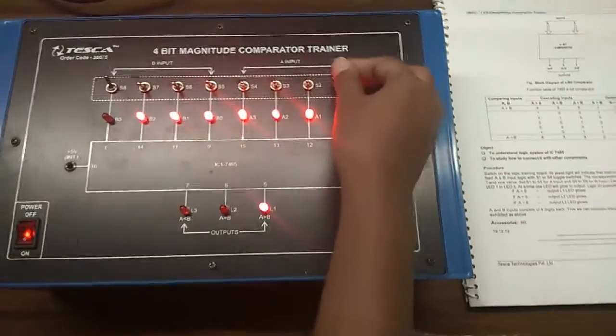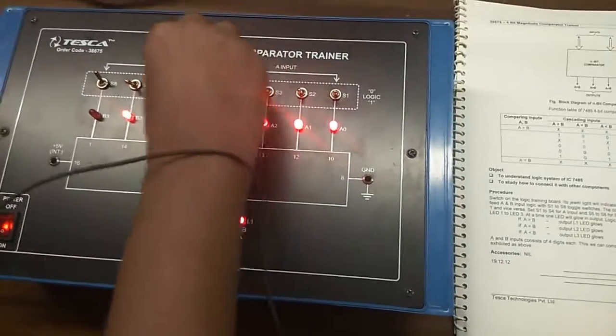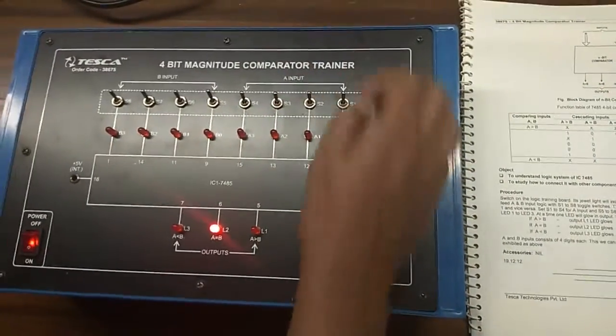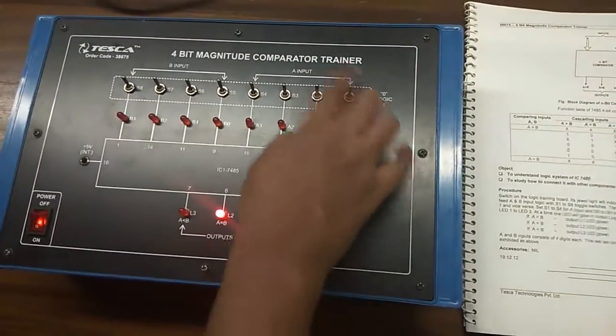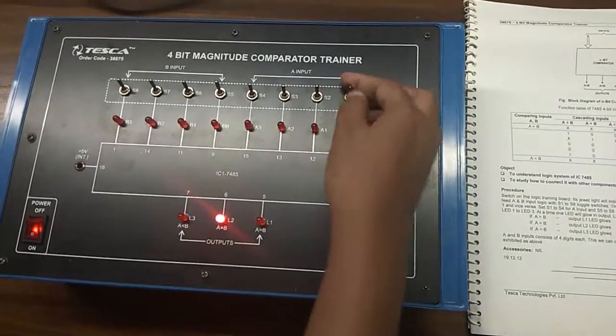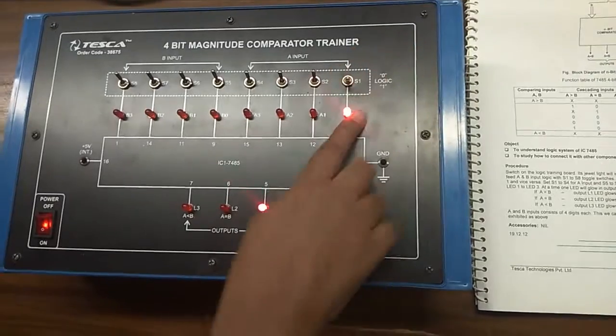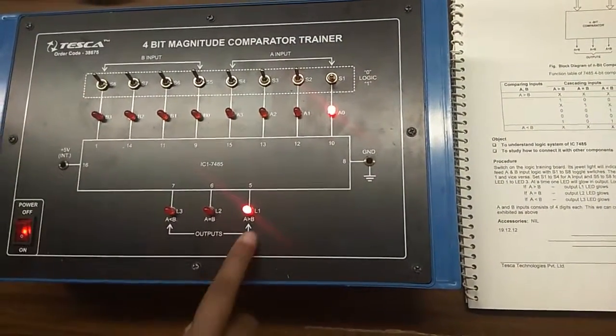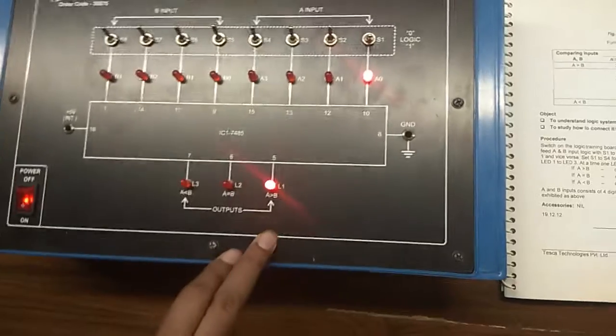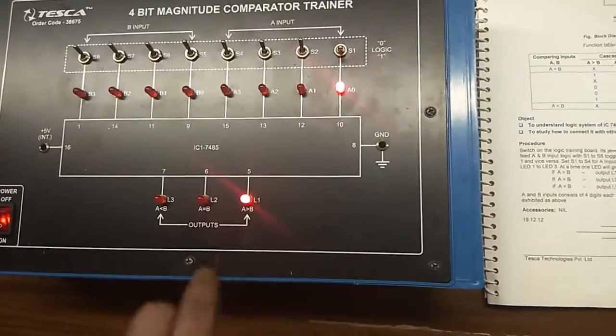First, turn on the kit and compare the inputs. I'm giving a 1 here and this is 0. My result will be A greater than B. This LED is indicating that.